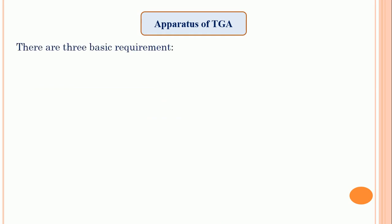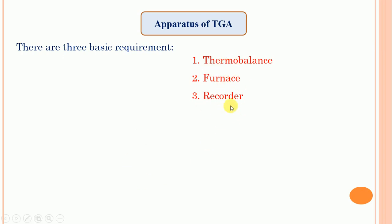Now see the apparatus used in thermogravimetric analysis. There are three basic components of thermogravimetry equipment. The first one is called the thermobalance, the second one is called the furnace, and the third component is called the recorder.